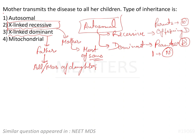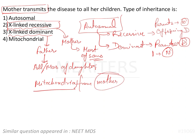In this case, the mother is going to transmit the disease to all her children. The mitochondria is basically a maternal genetic material, transferred from the mother. So if the mitochondria of the mother itself is defective, it will be transferred to all the offspring, whether female or male.